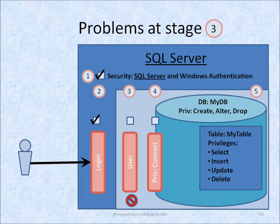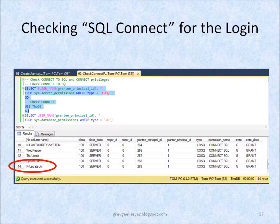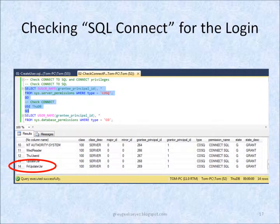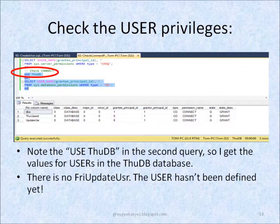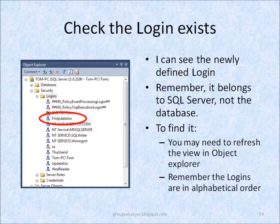This picture shows graphically where we're encountering the problem. I can check the situation by running some simple queries against the system tables. I've run a query which checks the privileges that Friday Update User has, and you can see that it has Connect SQL Privilege. If I now query the database permissions table again, this time looking for Connect Privilege, you can see that there is no Friday Update User. Another simple check is to look at the logins in Object Explorer, and here you can see Friday Update User.